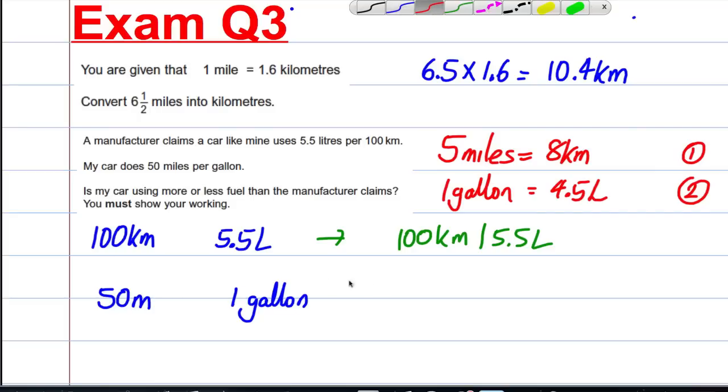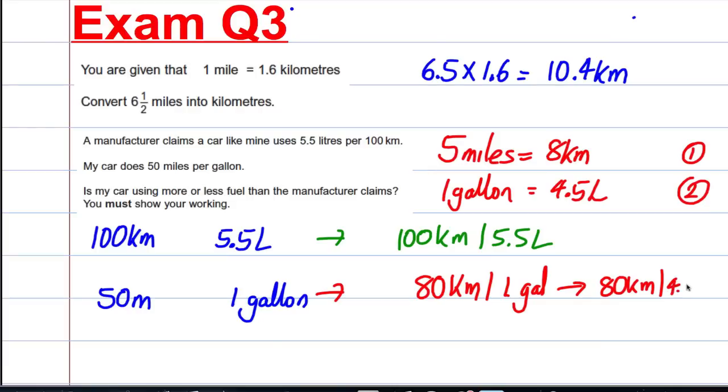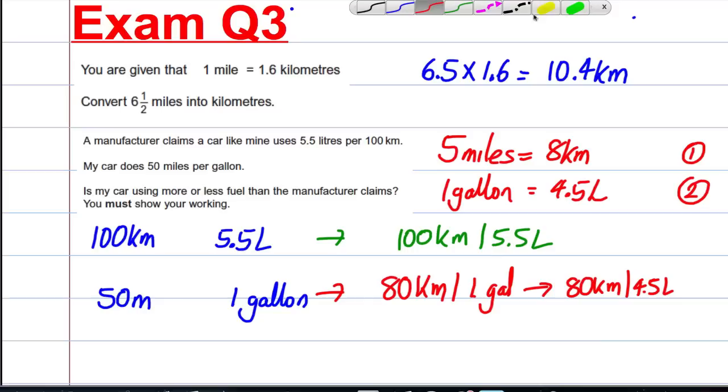This one, the first thing I'm going to do is I'm going to convert it into how many kilometres per gallon this is. So kilometres per gallon, how many kilometres per gallon? Well, 5 miles is 8 kilometres. So 50 miles must be 80 kilometres per gallon, 1 gallon. And we can convert that further. That's 80 kilometres per gallon is 4.5 litres. So we've got ourselves at this point. So now we are almost comparing like with like.